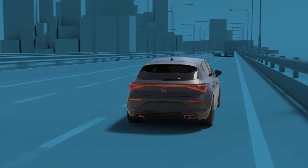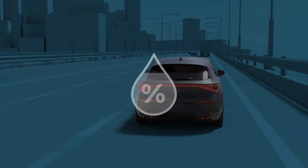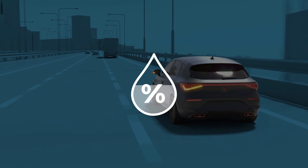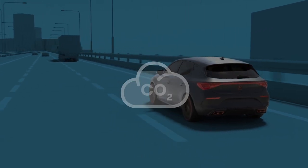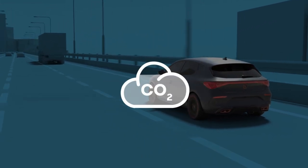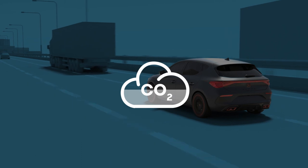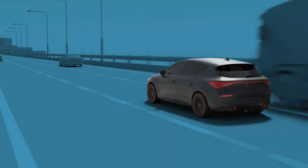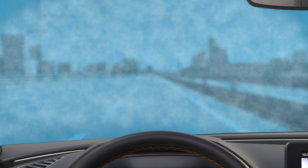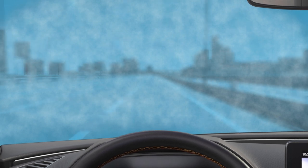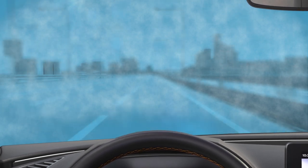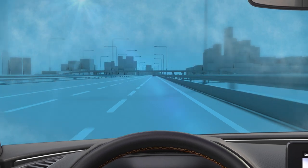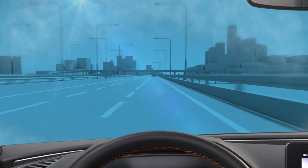Interior humidity regulation. The humidity sensor calculates the percentage of relative humidity in the passenger compartment by disconnecting the compressor when it is not necessary, for efficient energy consumption and reducing emissions of polluting particles. Another function of the humidity sensor is to ensure that the vehicle's windows do not fog, by allowing the climatronic to prevent this beforehand.